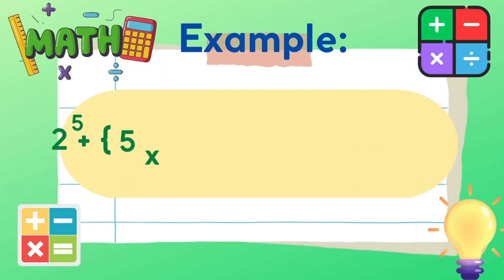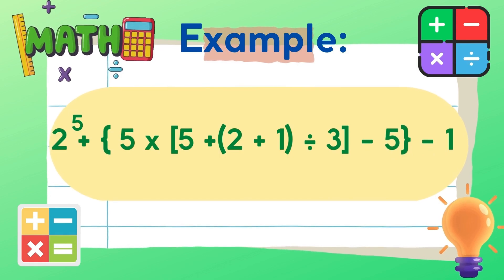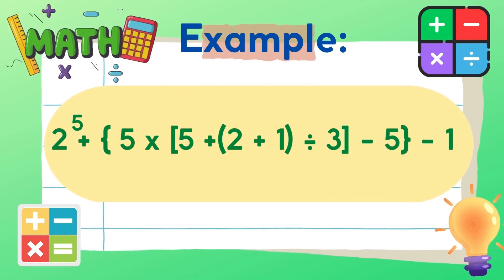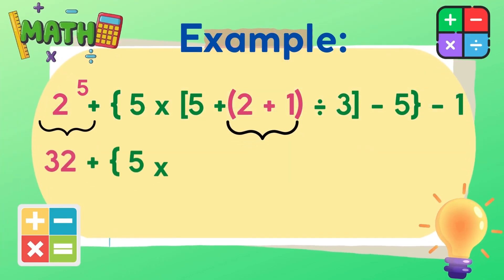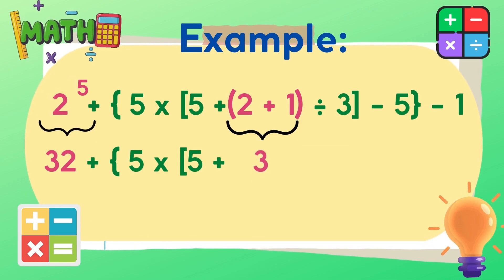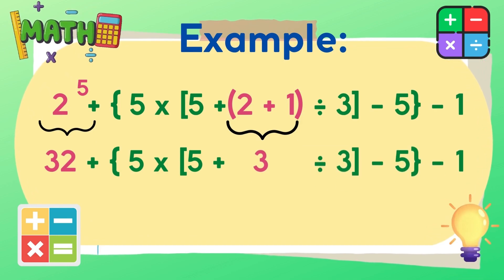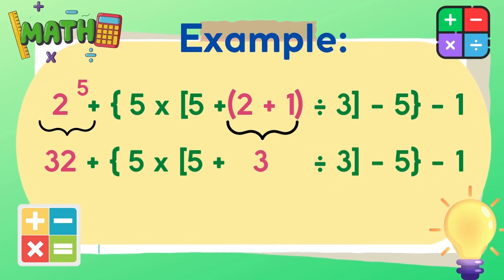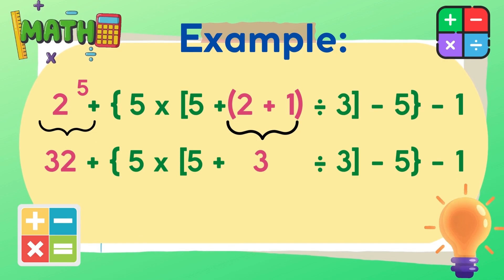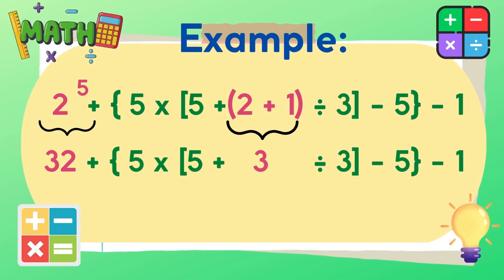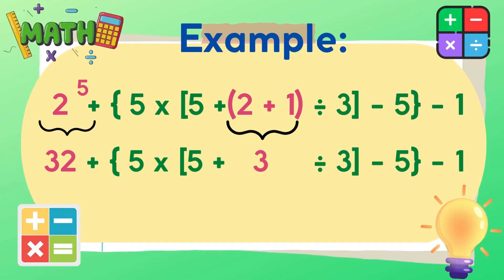First, we need to simplify 2 raised to 5, and that is equal to 32. Then perform the operation inside the parentheses, which is the addition of 2 and 1, so the sum is 3.